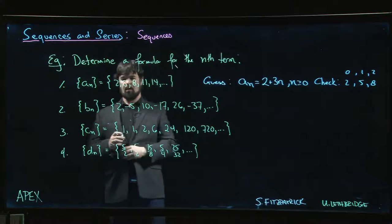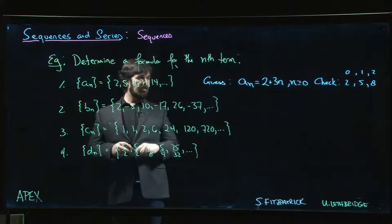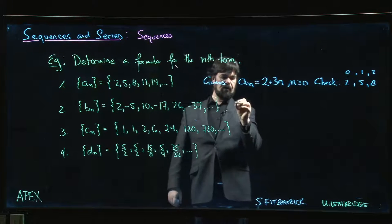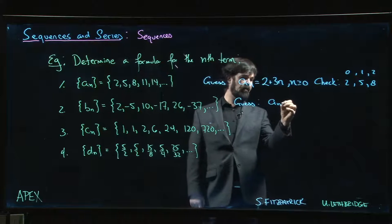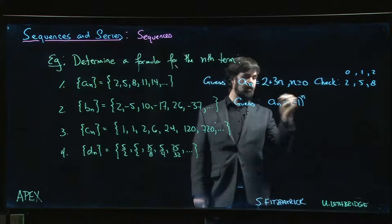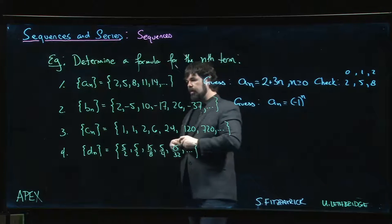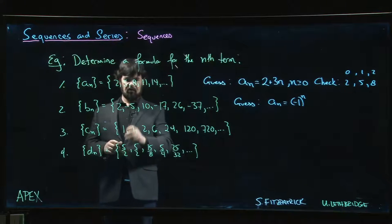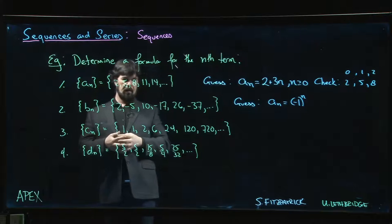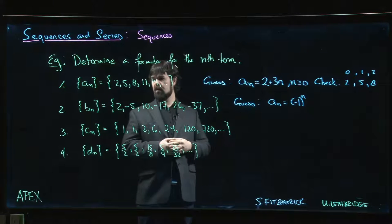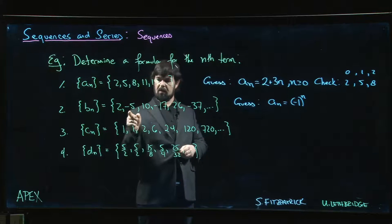For the next sequence, we notice the signs are alternating: plus, minus, plus, minus. When you see alternating signs, you might guess there's a (-1)^n factor in the formula. Including that to handle the signs, we can then focus on the magnitudes: 2, 5, 10, 17, 26, 37.